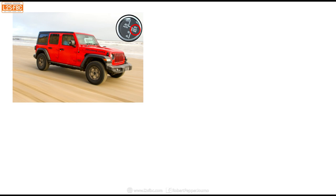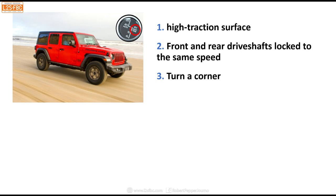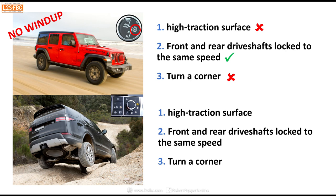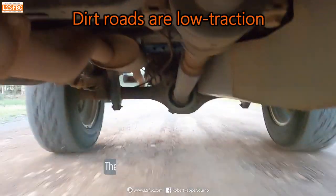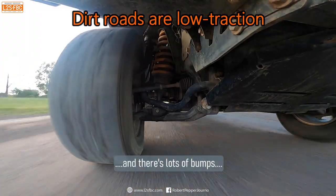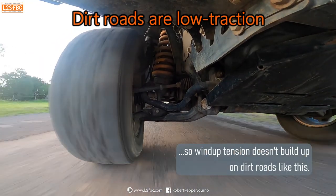Another example: a Jeep JL Wrangler in 4H part-time mode on a beach. High traction surface? No. Front and rear drive shafts same speed? Yes. Turning a corner? No. Wind-up? No — and we wouldn't get it even turning a corner because it's a low traction surface. For a Land Rover Discovery 5 (L462): not on a high traction surface, and the front and rear drive shafts are not locked — it has a computer-controlled centre coupling the computer won't keep locked. So no wind-up. The reason dirt roads prevent wind-up is that the loose surface plus bumps allow the wheels to slip enough that wind-up tension cannot build up.